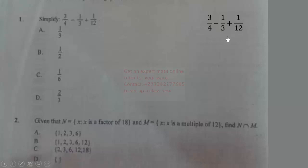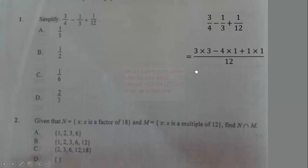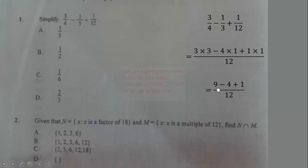The LCM is 12, meaning all of them can go into 12 — that is the least number that all these numbers can go into. We write down the LCM and figure out how many times each denominator goes into it: 4 goes into 12 three times, so multiply 3 by 3; 3 goes into 12 four times, so multiply 1 by 4; 12 goes into itself once, so multiply 1 by 1. The numerators become: 3×3=9, 4×1=4, 1×1=1.